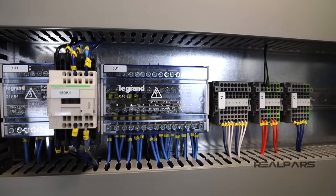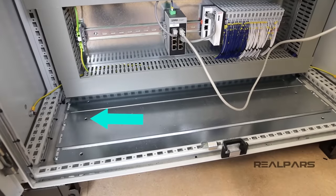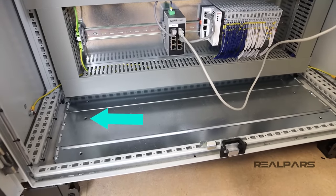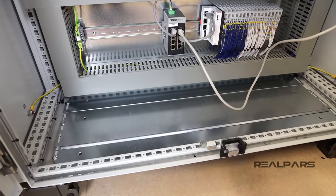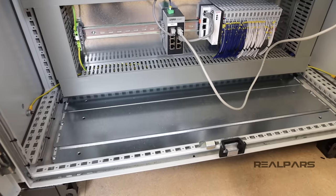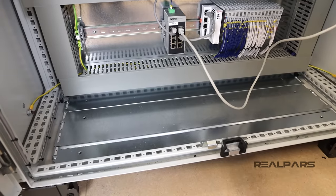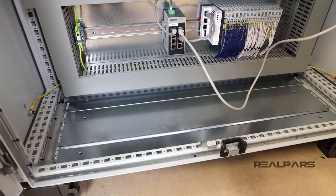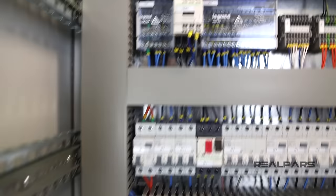It's very simple. First, we make some holes on the bottom of this panel, like the holes that we have here. This is called a gland plate and allows the cables to come into the panel. Then we put them into the trunking and connect them to the other end of these terminals.